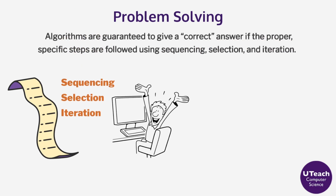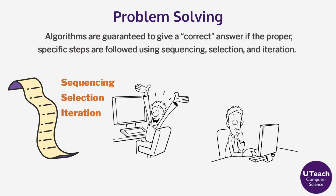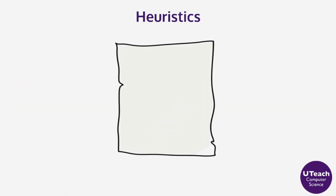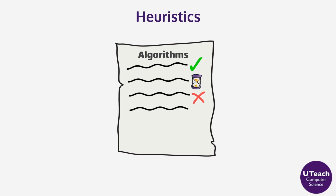However, what about problems that we do not know how to solve? Problems that no known algorithm can sufficiently address. What about problems that can be solved but would take too much time or resources? Although there are some problems that cannot be solved in a reasonable amount of time through computation, or in some cases solved at all, often a method for deriving an approximate solution may be defined using heuristics.